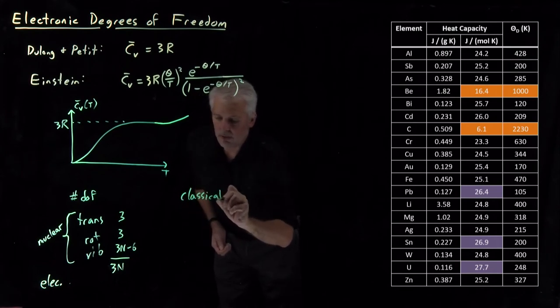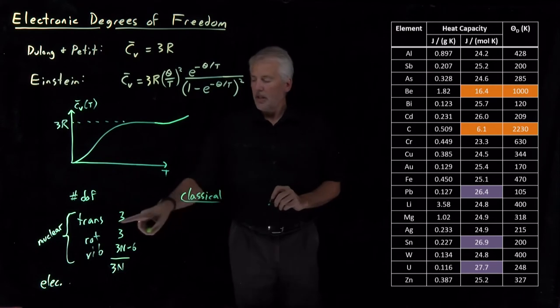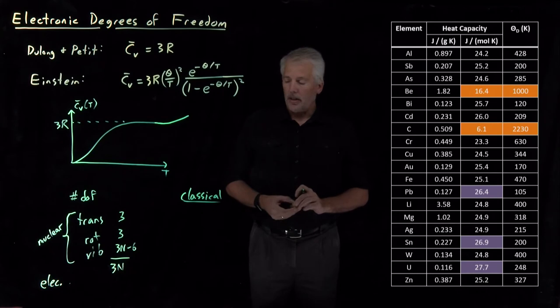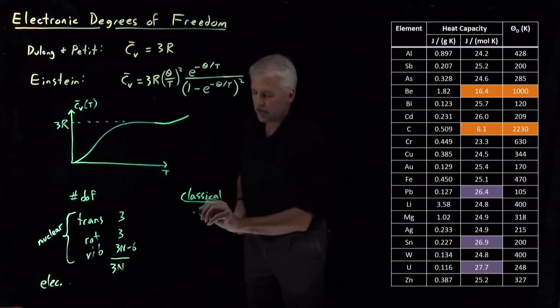Remember that the Equipartition Theorem requires these degrees of freedom to be classical in order to use the Equipartition Theorem estimate. Translations are always classical.